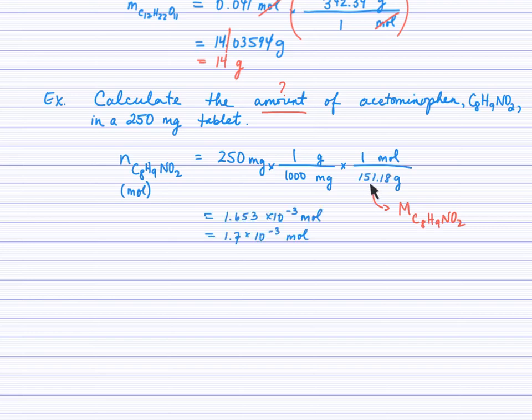Okay, and so we have 151.18 grams per mole from 8 carbons, 9 hydrogens, 1 nitrogen, and 2 oxygens. So we go ahead and plug into our calculator. 250 divided by 1,000 divided by 151.18. My calculator gives me 1.653 times 10 to the negative 3. And in cancelling my units, I see that milligrams cancel, grams cancel, that leaves me with moles, which is the unit here of the final answer.